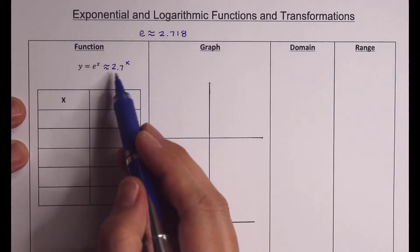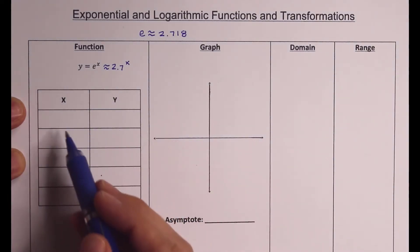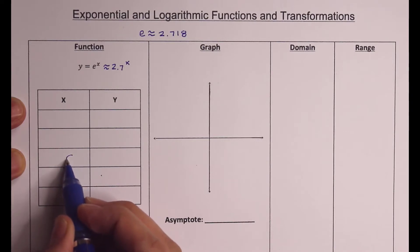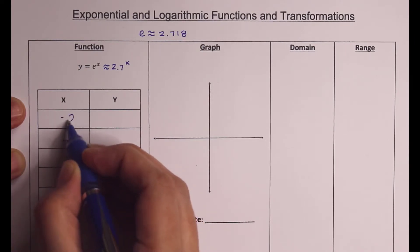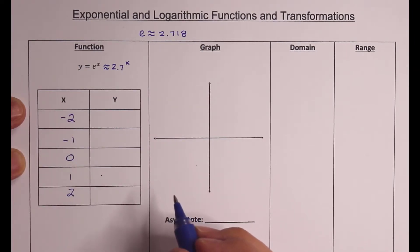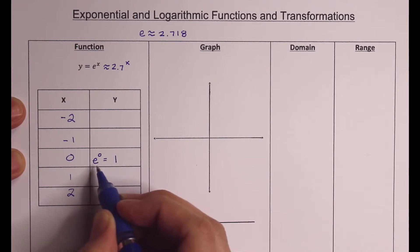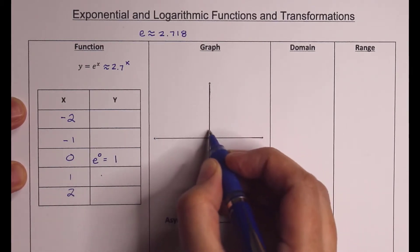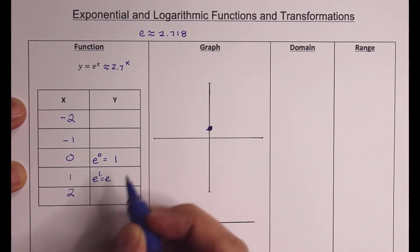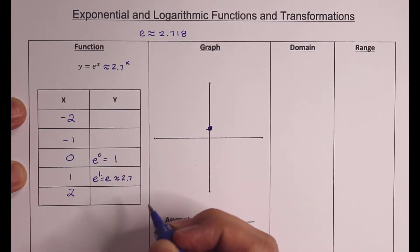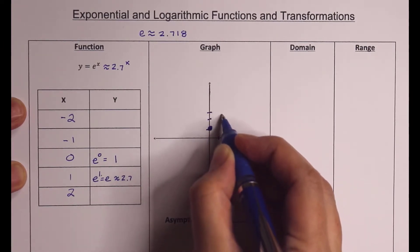In a previous video we graphed 3 to the x, so this is going to behave very similarly since 2.7 is not too far from 3. I'll pick x values: 0, 1, 2, negative 1, and negative 2. Starting with x = 0: e to the 0 is just 1 — any number to the 0 is 1. So plug in 0, get out 1. Then e to the 1st power is just e, which is about 2.7, so plug in 1, get out about 2.7.